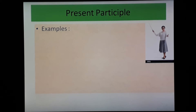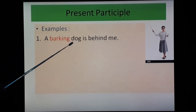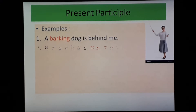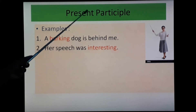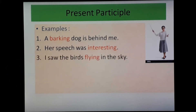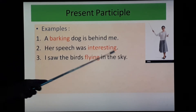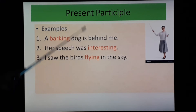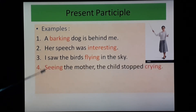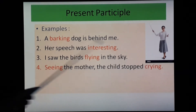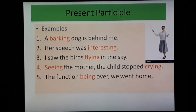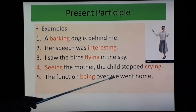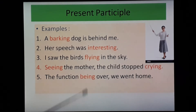More examples: 'A barking dog is behind me' — barking, bark plus -ing, present participle. 'Her speech was interesting' — interesting, interest plus -ing, present participle. 'I saw the birds flying in the sky' — flying, fly plus -ing, present participle. 'Seeing the mother, the child stopped crying' — seeing and crying, present participles. 'The function being over, we went home' — being, be plus -ing, present participle.